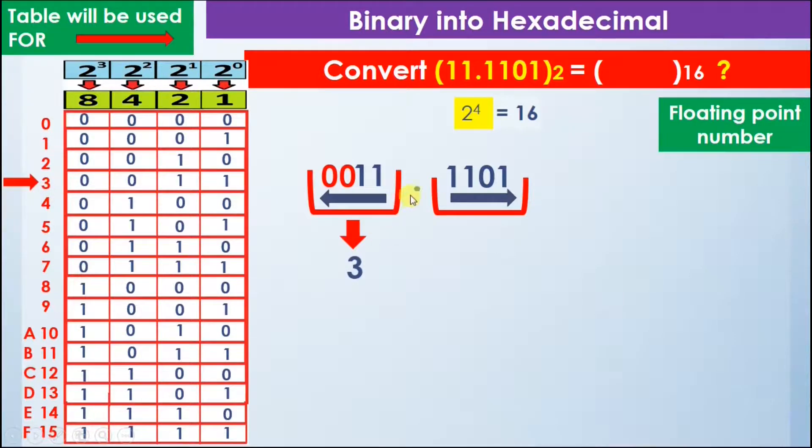Next comes the decimal point, and it will maintain its position. Now we have the second group 1101, and we will find the binary value 1101 in the table.